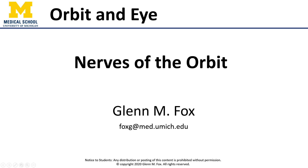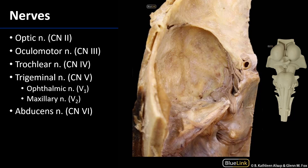Let's talk about the nerves of the orbit. The orbit is served by many different cranial nerves and branches of cranial nerves. I've included the brainstem model with many of these images so that we can appreciate and understand where these nerves are coming from.